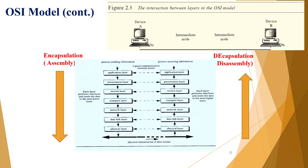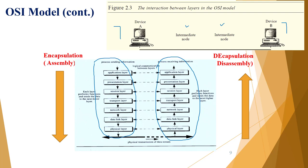When Device A wants to communicate with Device B, all seven layers are involved on both machines. Data is created at the application layer and moves downward through presentation and session layers — all three handling the PDU as 'data'. As data moves to the transport, network, and data link layers, each layer adds something to the data in a process called encapsulation.